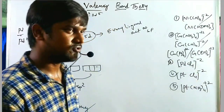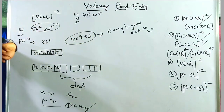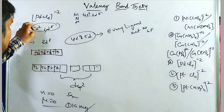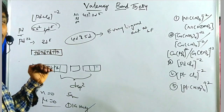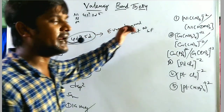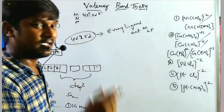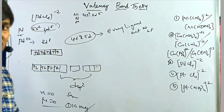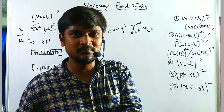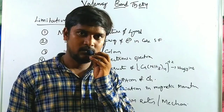Similarly, Pd²⁺ and Pt²⁺ always show dsp² square planar hybridization. For platinum: 6s² 5d⁸, and Pt²⁺ gives 5d⁸. In the 4d and 5d cases, every ligand acts as a strong field ligand — this is also related to the spectrochemical series. These examples cover inner orbital complexes, outer orbital complexes from octahedral, tetrahedral, and square planar geometry.